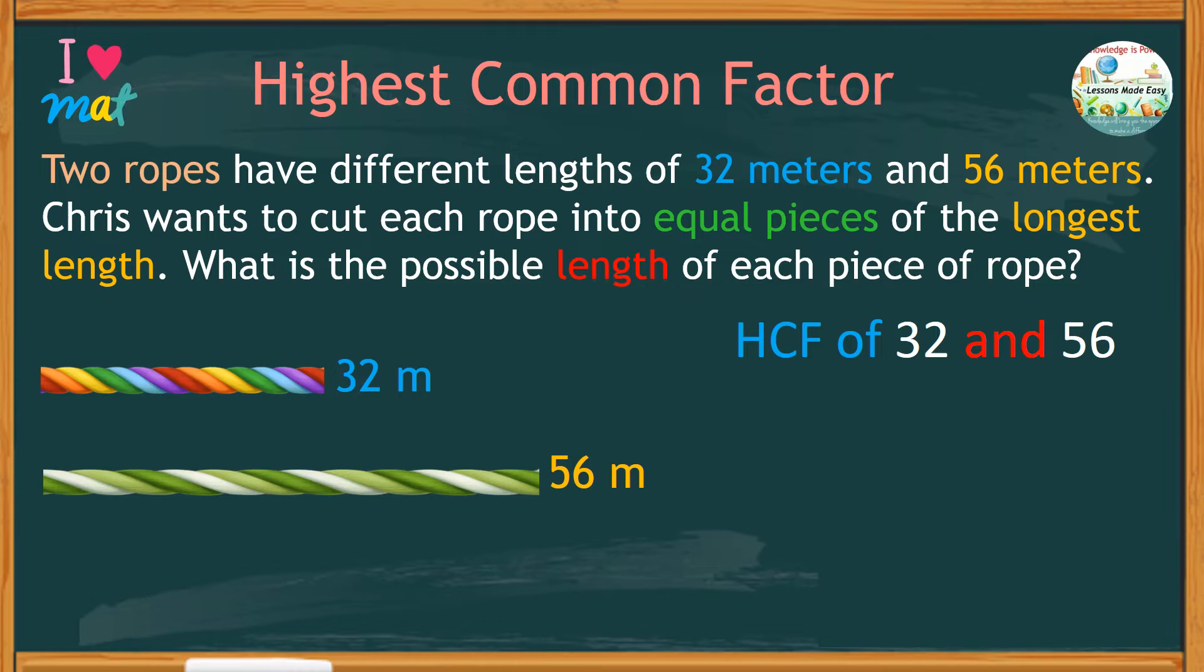We can do this by continuous division method. Think of a number that can be used to divide 32 and 56 without a remainder. What number could that be? If you say 8, then you're right. However, not everybody can easily spot the highest common factor at once. So, it is always easier to start with a small number as a divisor so you won't struggle that much.